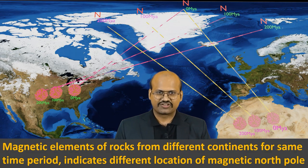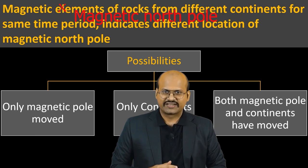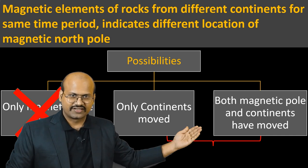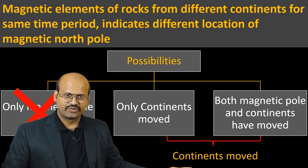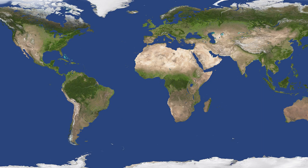Now, if only the poles had moved, then rocks from different continents of the same time period should have pointed in the same direction. But this was not the case — rocks of the same time period from different continents showed different locations of the magnetic poles. Therefore, we can rule out the possibility that only the poles could have moved. From the remaining possibilities, we can see that the continents must have moved. Just for your information, the current magnetic north pole is located in Canada.